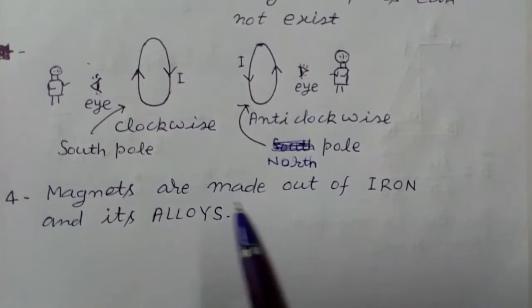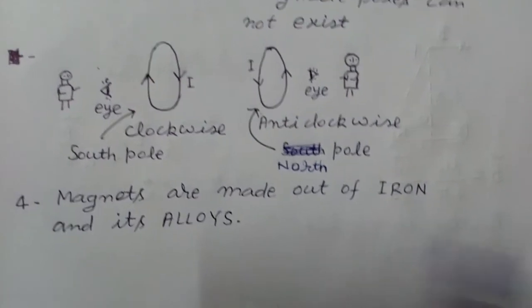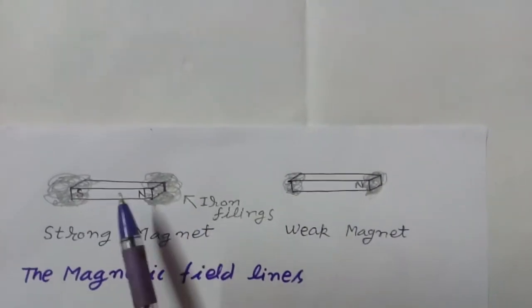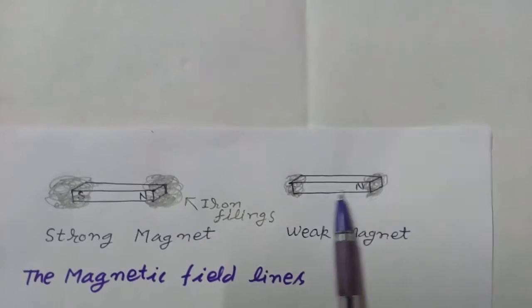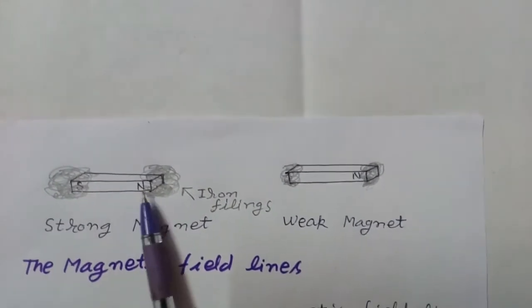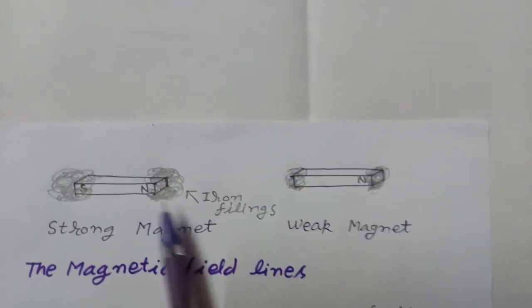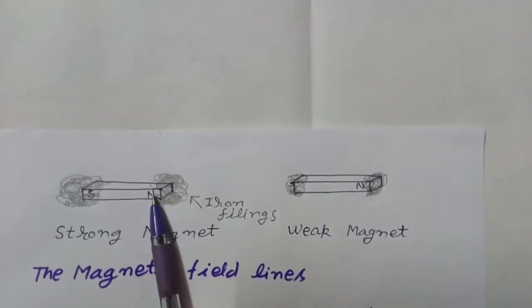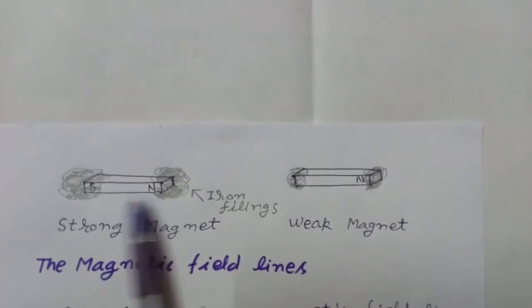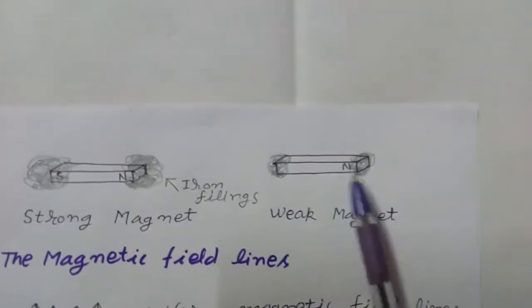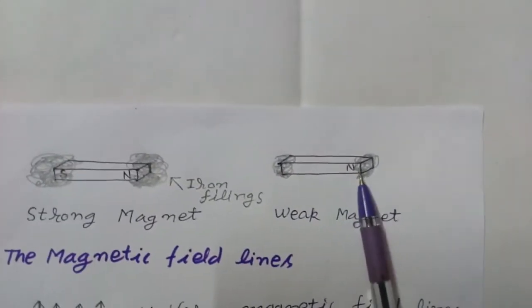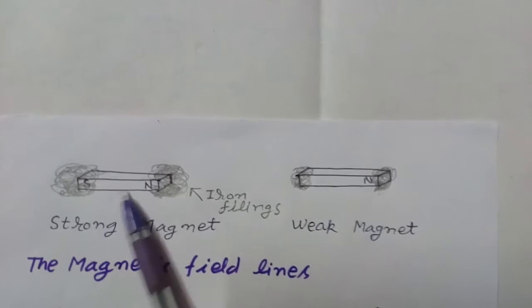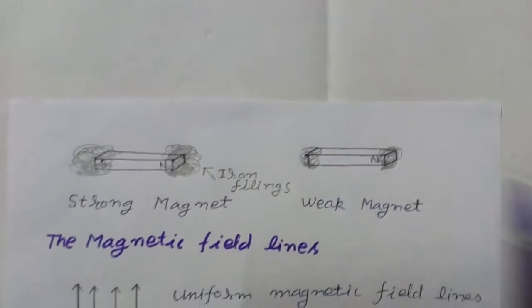Magnets are made out of iron and its alloys. Now suppose these are two bar magnets and we bring some iron filings close to them. You may see that near one bar magnet there are more iron filings, and near the other there are fewer — so we say one is a strong magnet and the other is a weak magnet.